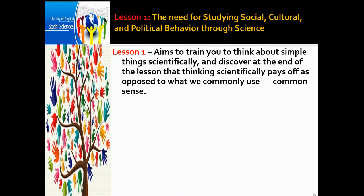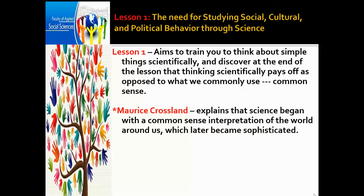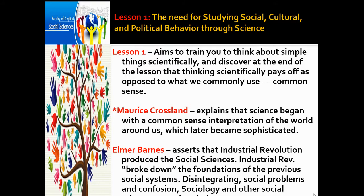Lesson one aims to train you to think about simple things scientifically, as opposed to what we commonly use — common sense. It is okay to have common sense, but it is also better to think based on process and scientific method. Maurice Crossland explains that science began with a common sense interpretation of the world which later became sophisticated. Elmer Barnes asserts that during the Industrial Revolution, social sciences emerged as the revolution broke down the foundations of previous social systems, creating social problems and confusion.